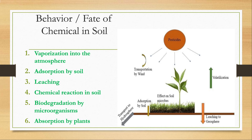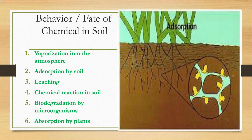When pollutants reach or are added to soil, they may undergo six possible processes: vaporization, adsorption, chemical reaction, microorganism modification, leaching, and absorption by plants. In vaporization, some pesticides vaporize into the atmosphere without chemical changes and return to soil or surface water with rain.